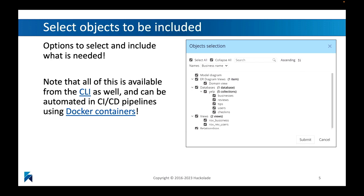This is an important part. Especially on larger models, there's quite a bit of documentation being generated — you could be looking at hundreds of pages, which is not always necessary. You might want to be more granular and divide the documentation into multiple parts by selecting the objects to be included. All of this is completely automatable using our command line interface — the CLI can generate documentation automatically, for example overnight, running inside a Docker container based on the model files you provide.